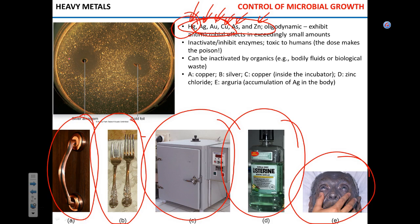Taking overall, Listerine contains a little bit of zinc chloride, although its effectiveness on the microbiome of the mouth is debatable. In addition to that, Listerine also contains ethanol, which is another antimicrobial agent. So what we have left in practical use is usually silver and copper.